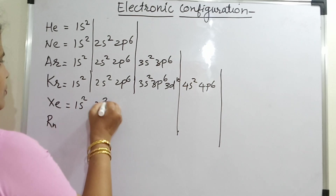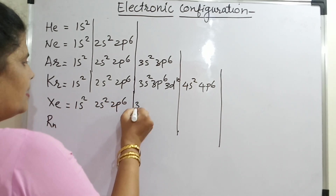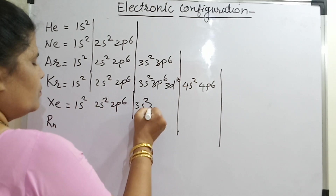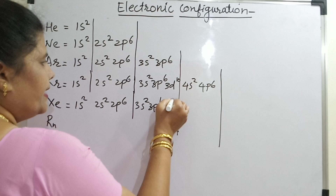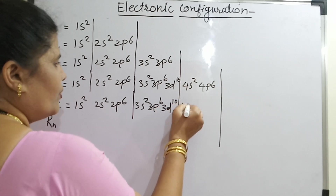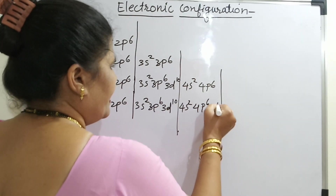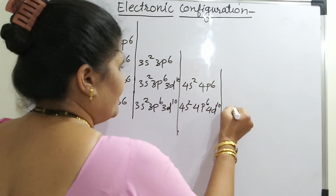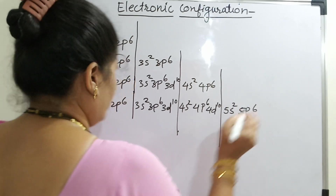For xenon: 1s2, 2s2, 2p6, 3s2, 3p6, 3d10, 4s2, 4p6, 4d10, 5s2, 5p6.